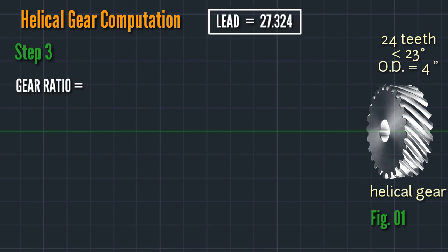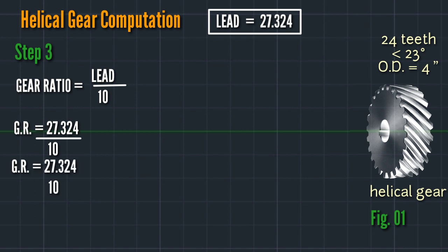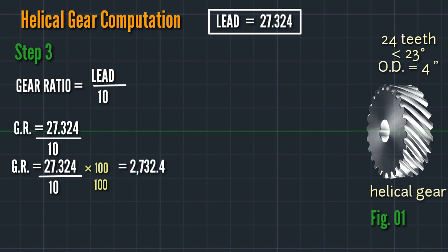Step 3 — gear ratio equals lead divided by lead of machine (18). Gear ratio equals 27.324 divided by 18. Multiplying by 100 over 100: 27.324 times 100 equals 2732.4, and 18 times 100 equals 1800. Simplifying gives a ratio expression.